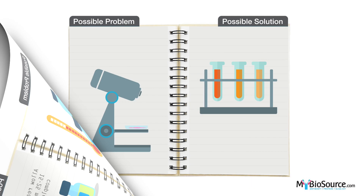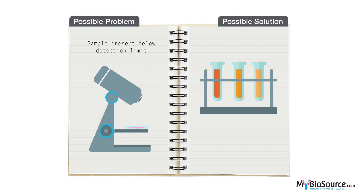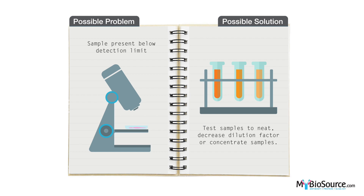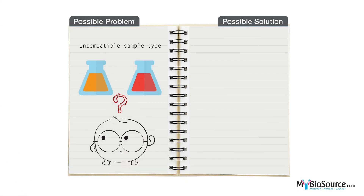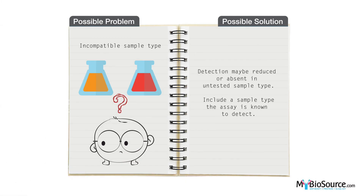In some cases a sample may be present below the detection limit; therefore you may need to decrease the dilution factor, test your samples undiluted, or concentrate your samples. Another possible problem leading to low or no signal is the use of incompatible sample types with our kits. Please refer to the manual and ensure you are using a sample type the assay is supported for and known to detect.